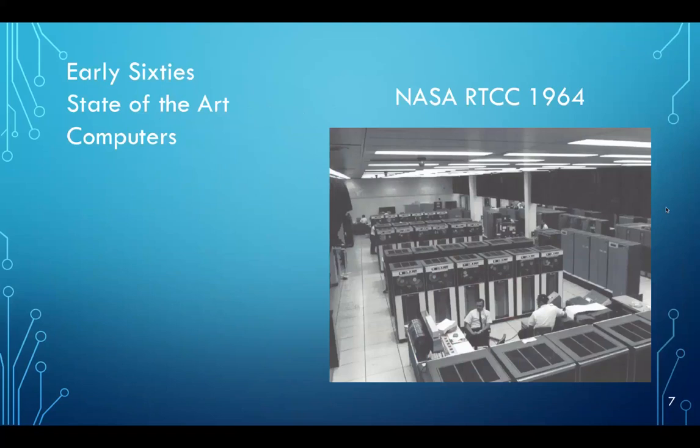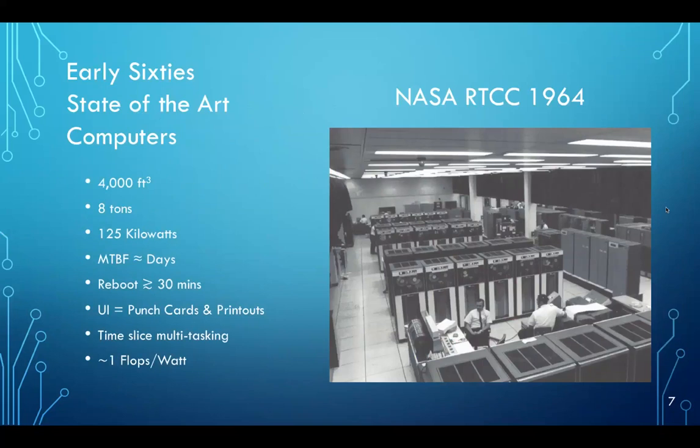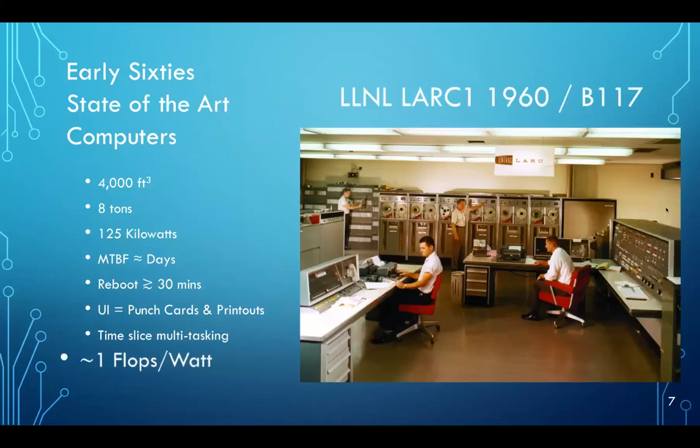So to put things in context here, we'll talk a little bit about the state-of-the-art computers in the 1960s. So this is a picture of the NASA real-time computing complex, 1964. The machines of that era, of course, were quite large, taking up huge rooms. They weighed a lot. They took up a lot of power. The mean time between failure was on the order of days, maybe weeks. It took a long time to reboot them, and when they did fail, the user interface was very simple, punch cards and paper printouts. And most importantly of all, they were down around one flops per watt compute capability. And just for some more context, this is actually a picture of the machine room in Building 117 at Livermore Labs back in 1960, and that's the Livermore Advanced Research Computer One. It was a UNIVAC system.